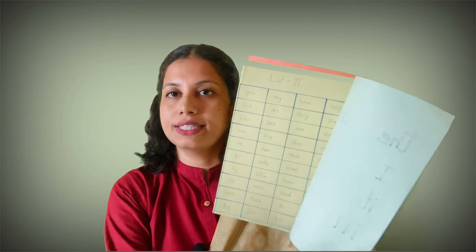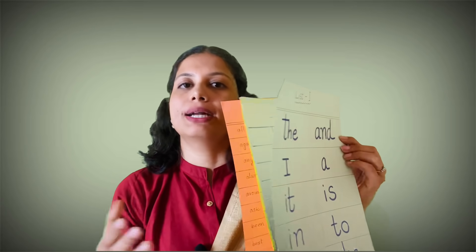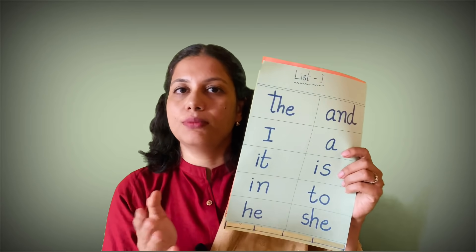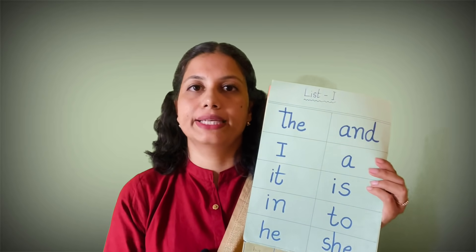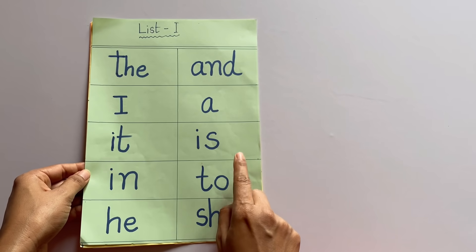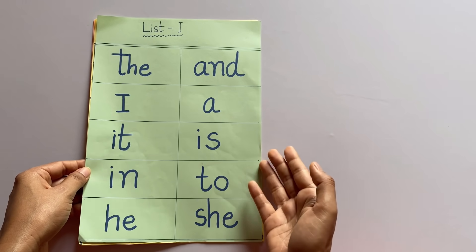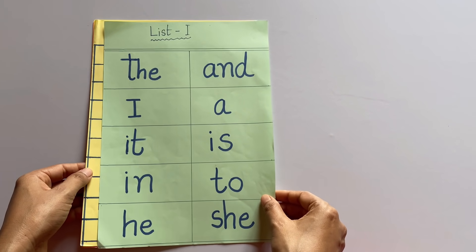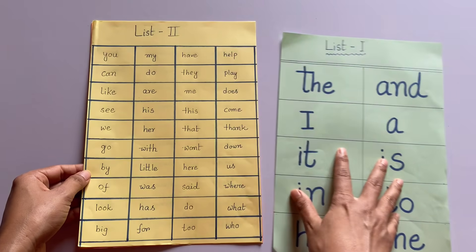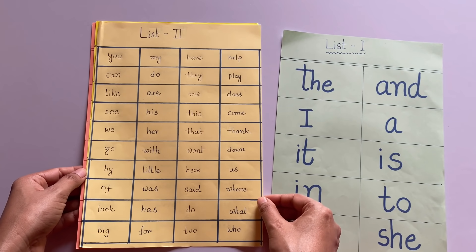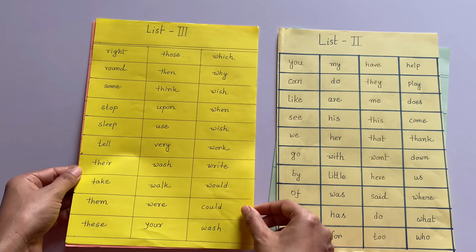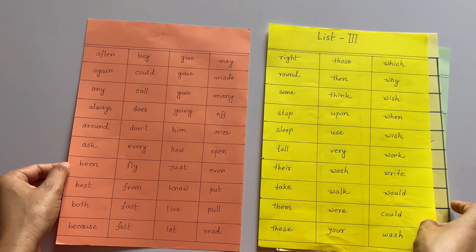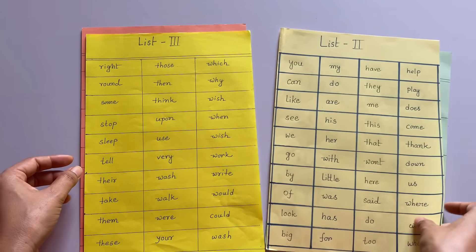But when you go to UKG or Standard 1, you can move on to the sight word list. I will give you a PDF. If you want to improve your reading and writing speed, the list is organized by level — basic method for beginners, UKG level, Standard 1, and Standard 2.